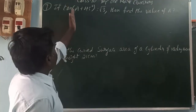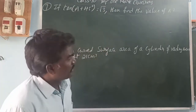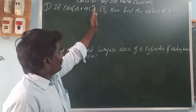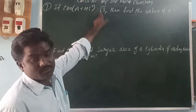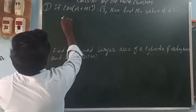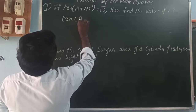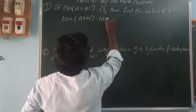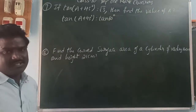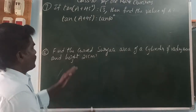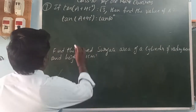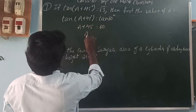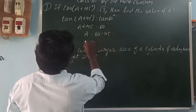If tan(A + 45°) equals √3, find the value of A. The tan ratio equals √3 at 60 degrees, so tan(A + 45°) equals tan 60°. Since both sides have the tan ratio, A plus 45 equals 60, therefore A equals 60 minus 45, which is 15 degrees.